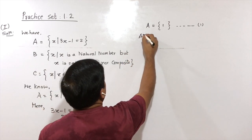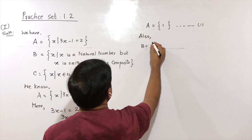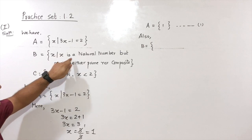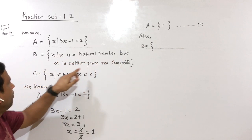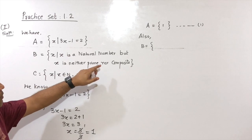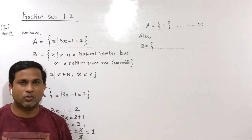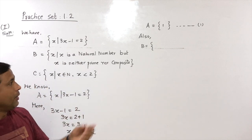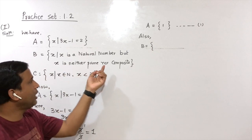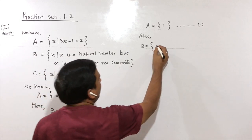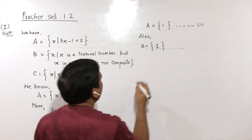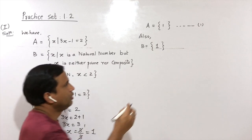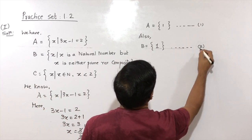For set B: writing it in listing method, it says X is a natural number but X is neither prime nor composite. Natural numbers are 1, 2, 3, 4, 5, 6 and so on. The condition is X is neither prime nor composite. Only 1 is a number which is neither prime nor composite, so set B = {1}. Let this be statement number 2.